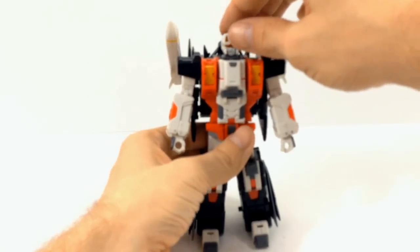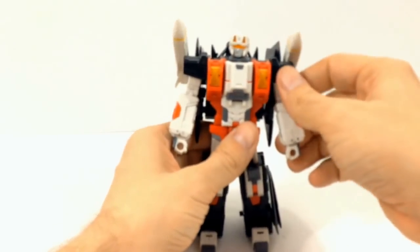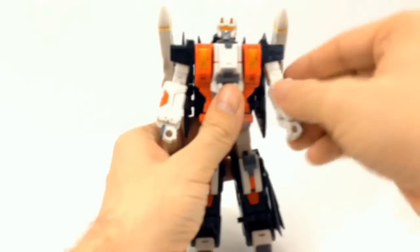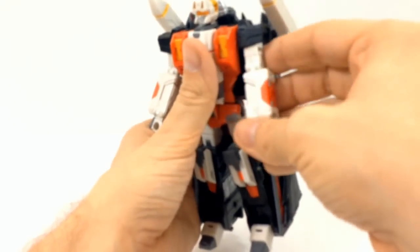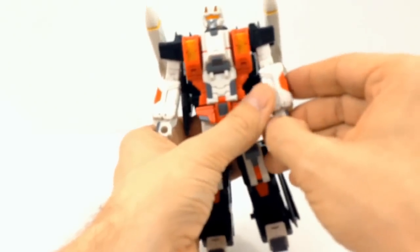Alright. And for his movement, he does have a ball joint in the head. You can move his shoulders up like that and out like that. He does have elbow joints. He doesn't have any kind of movement in his wrist.